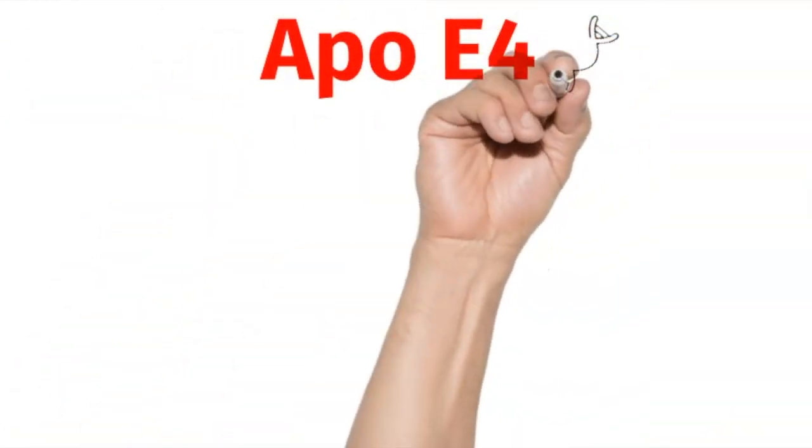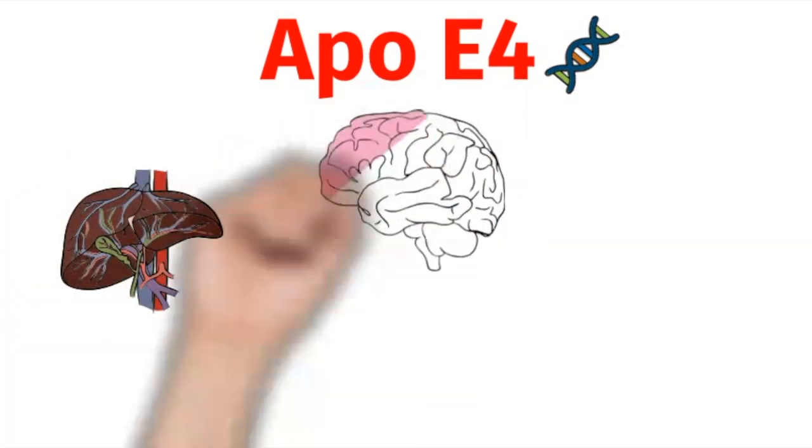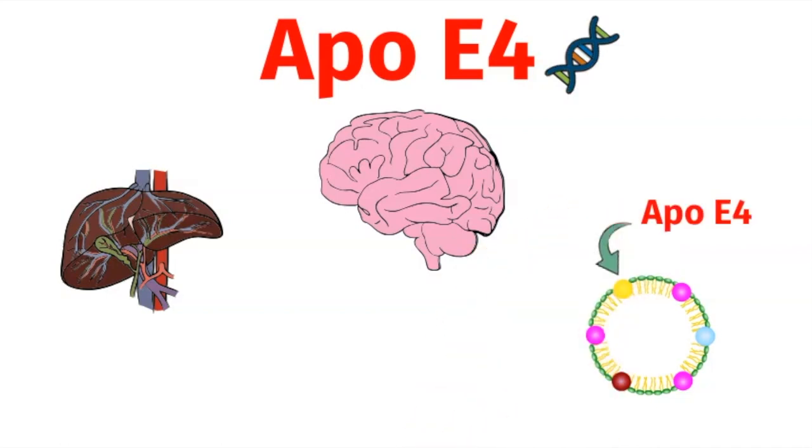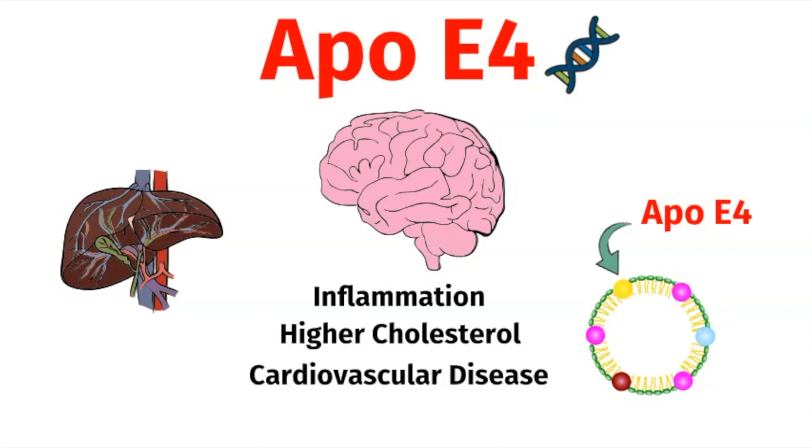ApoE4 is the strongest known genetic factor for Alzheimer's disease. It's a protein that's produced in the liver and the brain that transports fatty acids and cholesterol. Unfortunately, ApoE4 is a risk factor for inflammation, higher cholesterol, cardiovascular disease, as well as Alzheimer's disease.